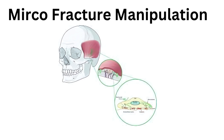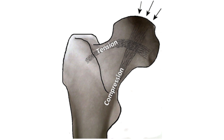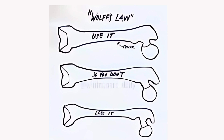Next is Microfracture Manipulation based on Wolff's Law, developed by German anatomist Julius Wolff in the 19th century. Wolff's Law is a principle in biology that explains how bones adapt to the amount of stress or load placed on them. In simple terms, if you regularly put stress on your bones — like through exercise or physical activity — they become stronger and denser.